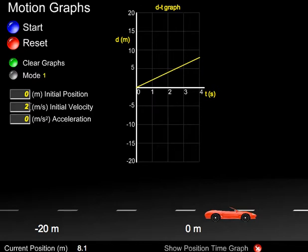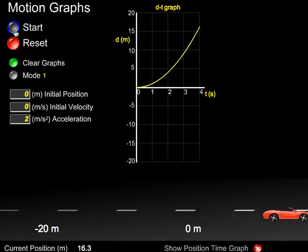Now let's see what acceleration looks like. Okay. So we've started the car off at a position of zero. We've also given it an initial velocity of zero. And an acceleration of 2 meters per second squared. Let's see. Notice that when we have acceleration, in this case the object was speeding up, the position time graph produces a curve.